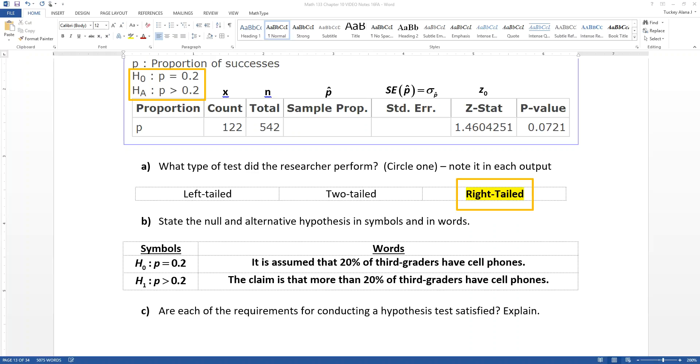So the first thing. We know it's a simple random sample because it's given to us in the problem setup. It says simple random sample. Actually, I think it says random sample, but we assume that that's a simple random sample. Everything's fine. Given to us.